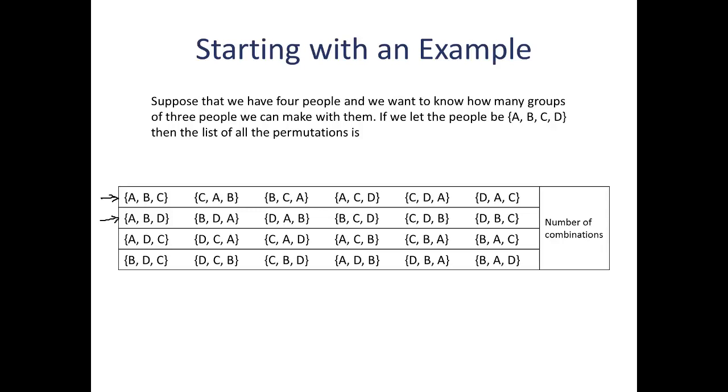Now, the key thing you should notice is that three is the size of each set in our list. So, remember that if you look at the entire table, it has all the permutations of a set of four elements into groups of three. So, with this information, we can calculate the number of combinations. Here's how we're going to do it.